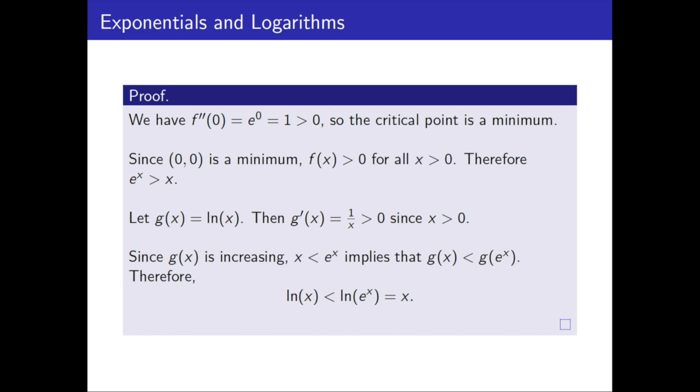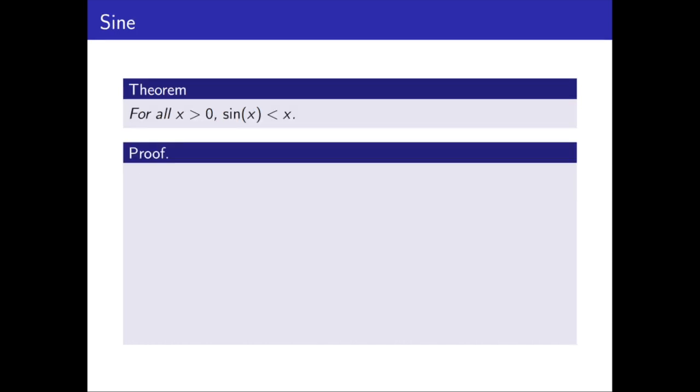So we used our inequality for exponentials to prove the inequality for logarithms. So there's one more inequality we'd like to look at, and that is sine. So for all x greater than 0, sine of x is less than x. How do we show that?